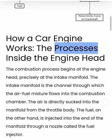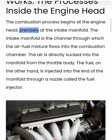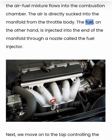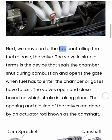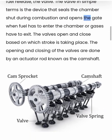The processes inside the engine head: the combustion process begins at the engine head, precisely at the intake manifold. The intake manifold is the channel through which the air-fuel mixture flows into the combustion chamber. The air is directly sucked into the manifold from the throttle body. The fuel, on the other hand, is injected into the end of the manifold through a nozzle called the fuel injector. Next, we move on to the tab controlling the fuel release — the valve.